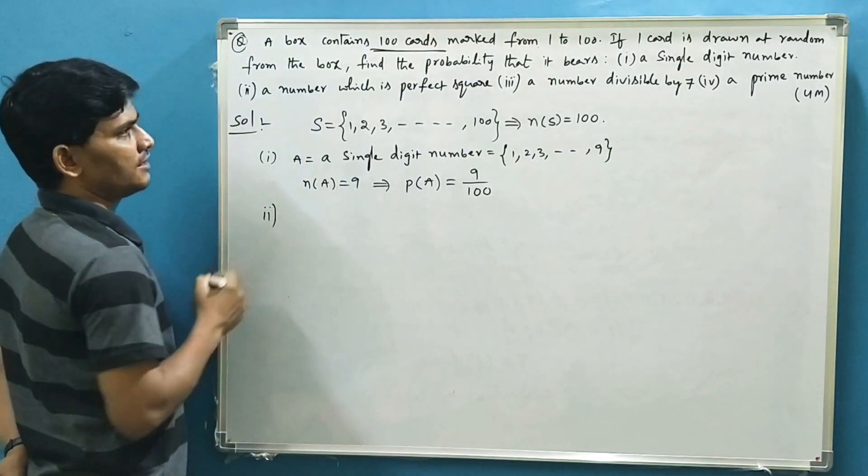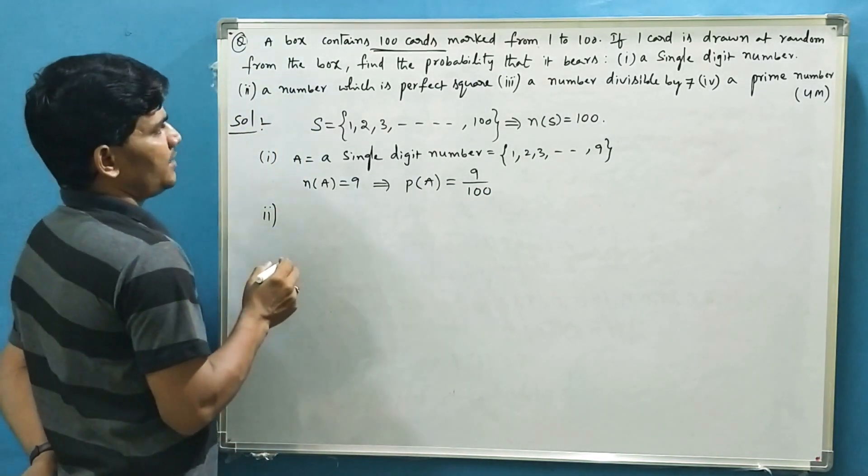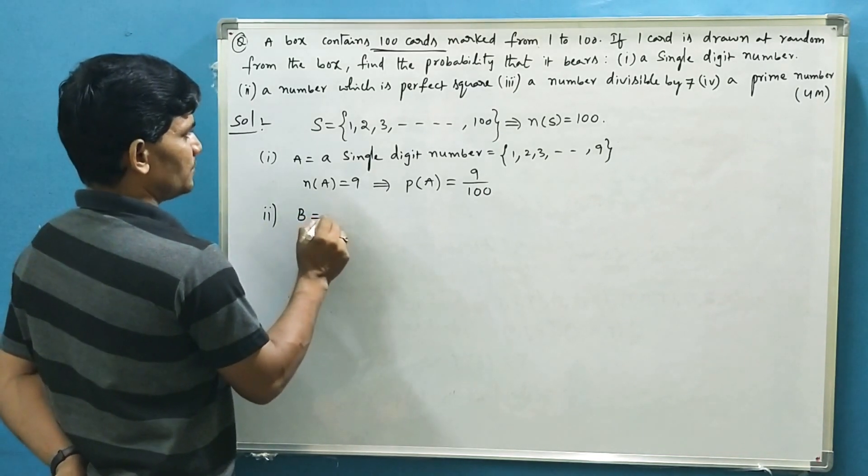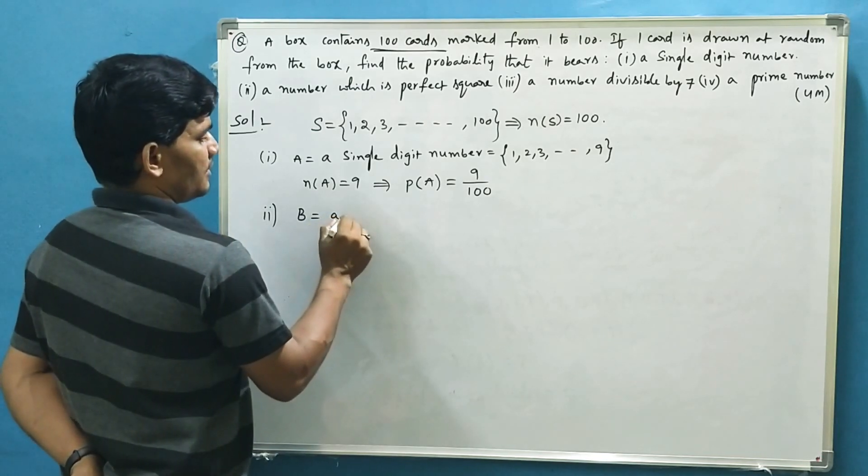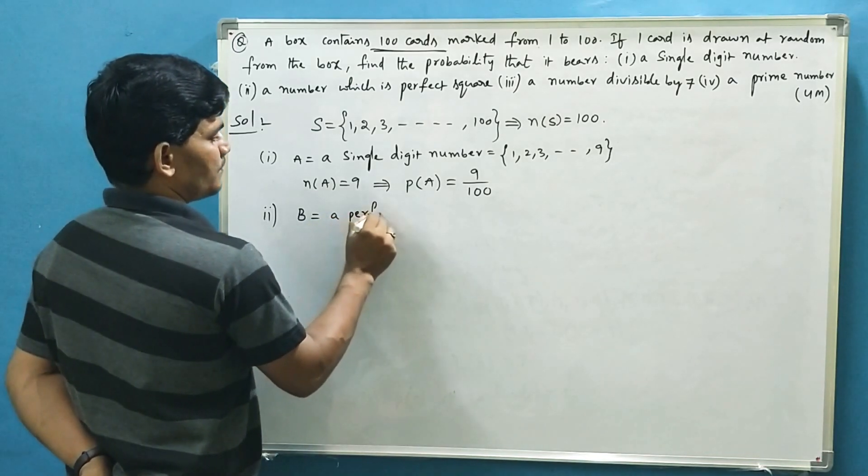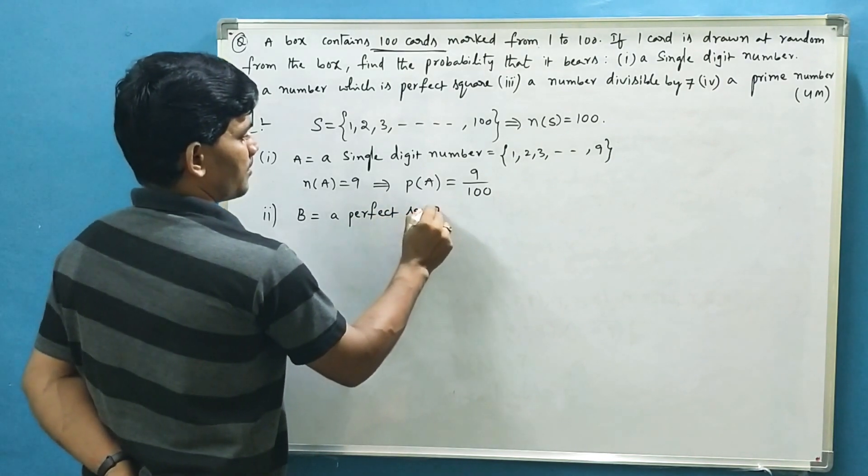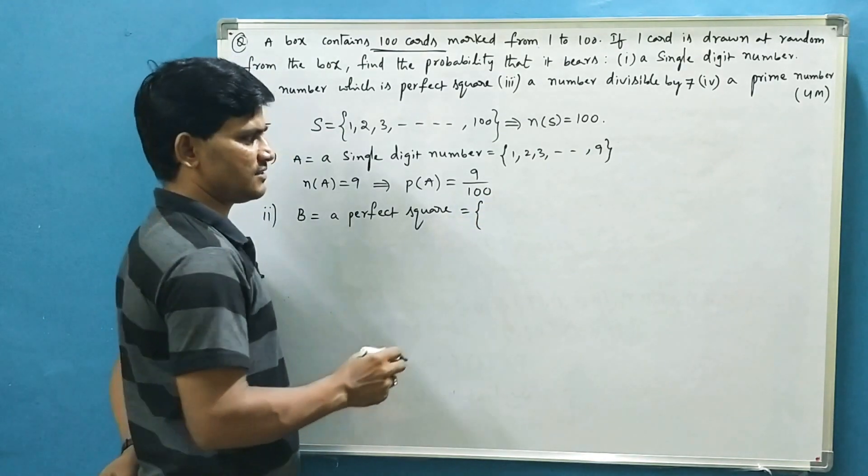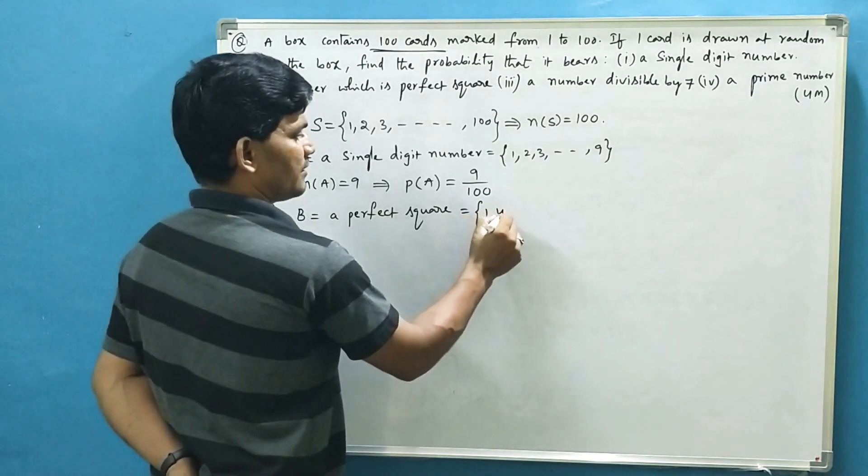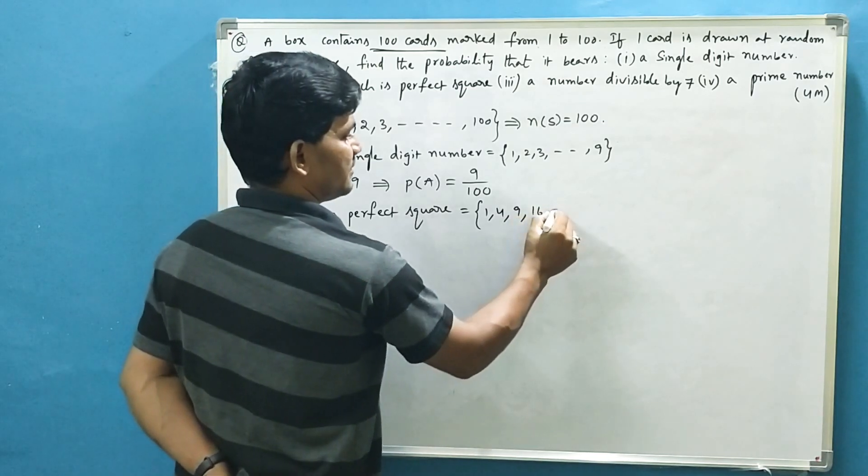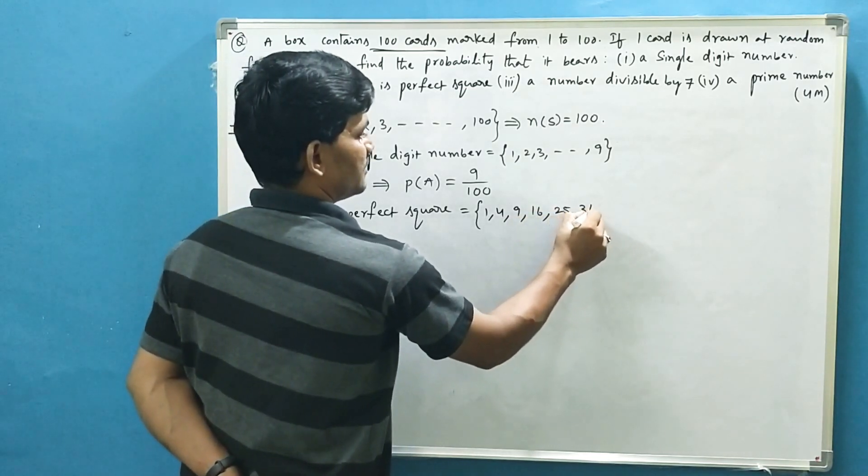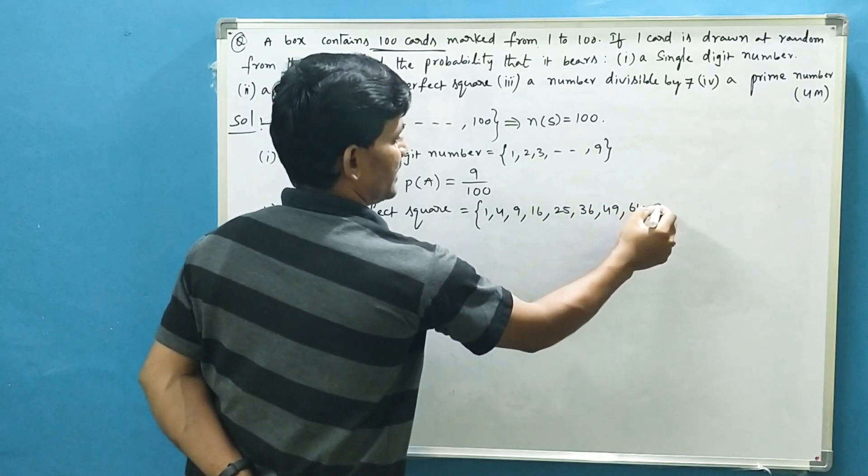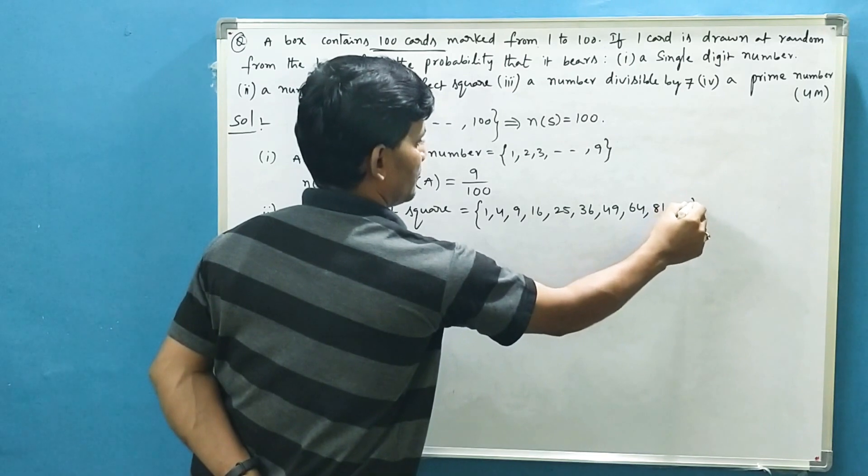Second one is a number which is a perfect square. Let the event be B, a perfect square. What are the perfect squares? That is, the square numbers: 1, 4, 9, 16, 25, 36, 49, 8 square 64, 9 square 81, 100.